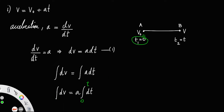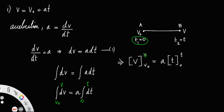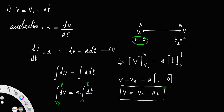When time is 0, velocity is v₀, and after time t the velocity is v. So velocity varies from v₀ to v, and time varies from 0 to t. The integral of dv is v, evaluated from v₀ to v, equal to a times the integral of dt evaluated from 0 to t. By the procedure of definite integrals, we put the upper limit minus the lower limit: v minus v₀ = a times (t minus 0). Therefore v = v₀ + at. This is the way we find the first kinematic equation using integration.